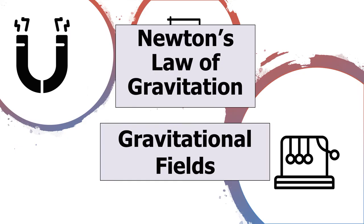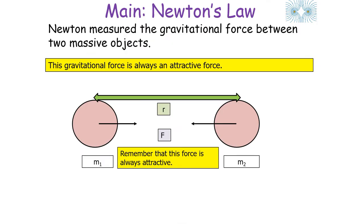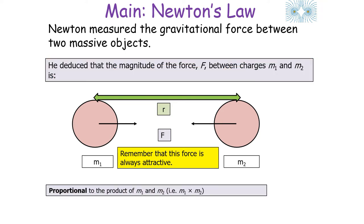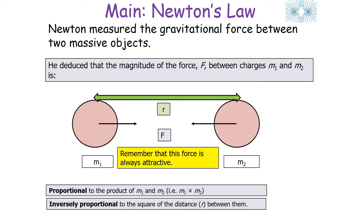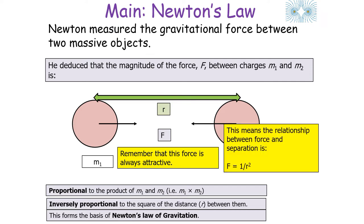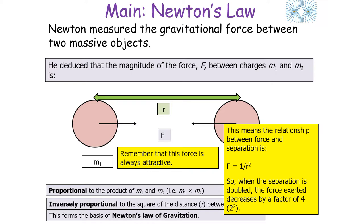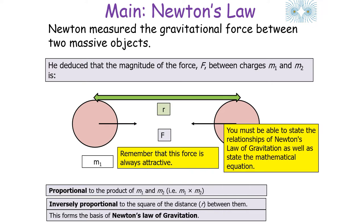Newton measured the gravitational force between two massive objects. This gravitational force is always attractive. He deduced that the magnitude of the force F between masses m1 and m2 is proportional to the product of m1 and m2, but inversely proportional to the square of the distance between them. This formed the basis of Newton's law of gravitation. When the separation of two massive objects is doubled, the force decreases by a factor of 4 (2 squared). You must be able to state both the relationships and the mathematical equation.